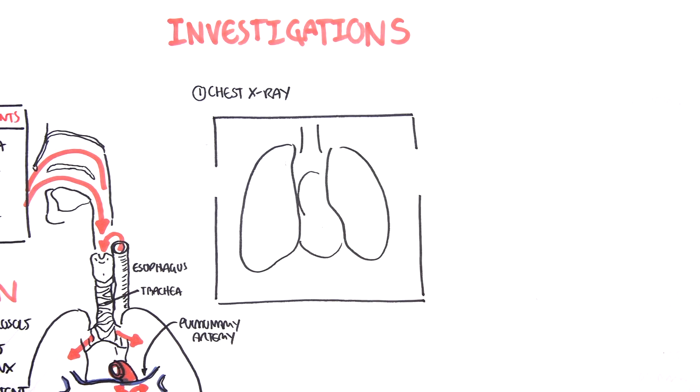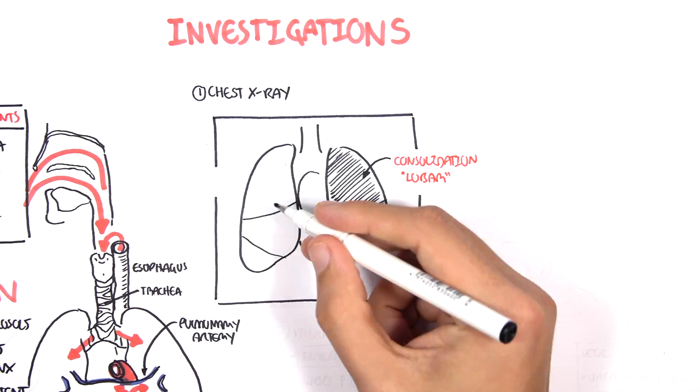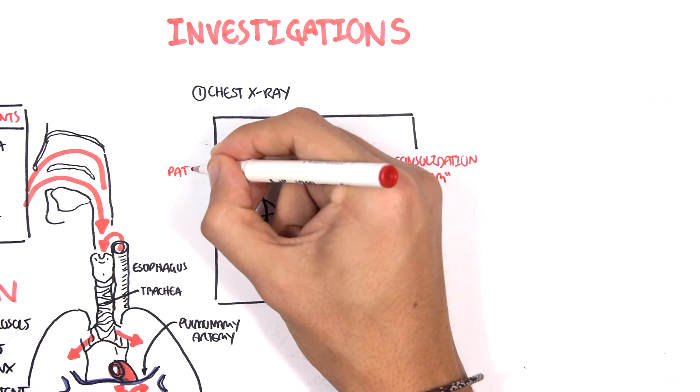It can be consolidation to a lobe, or termed lobar pneumonia, or it can be patchy like bronchopneumonia.